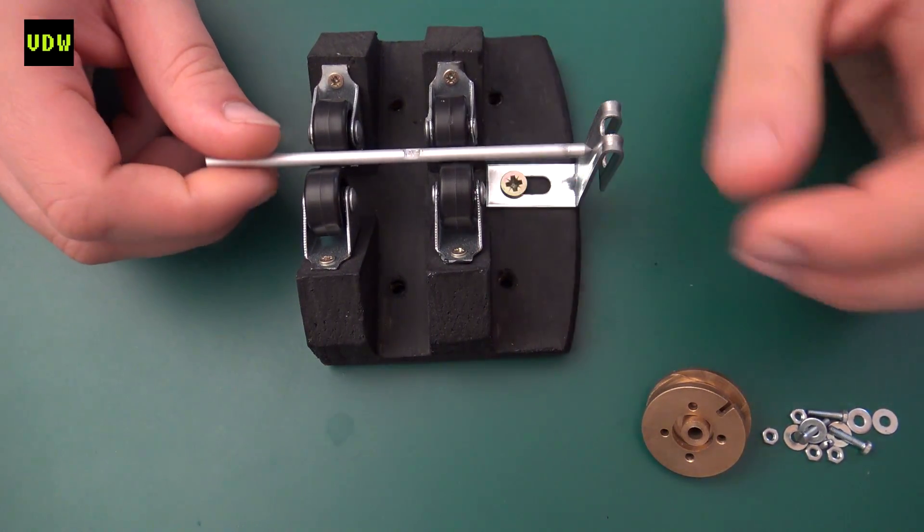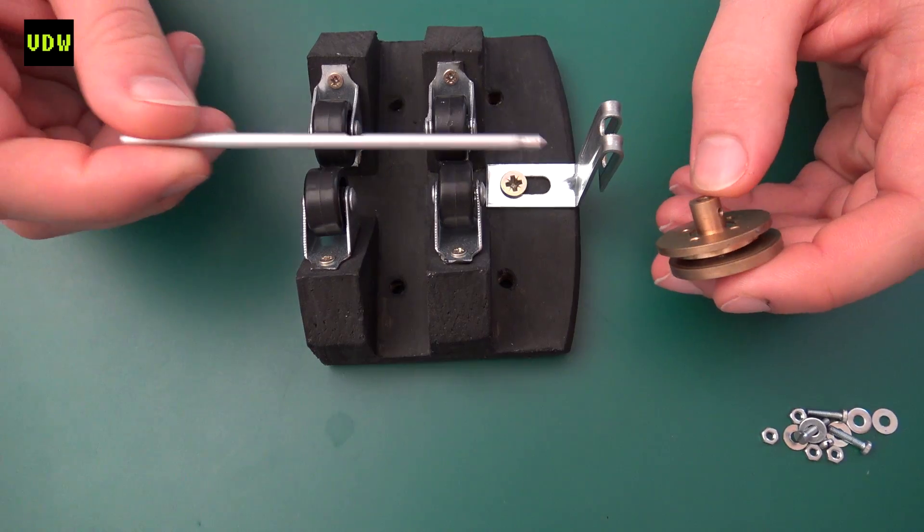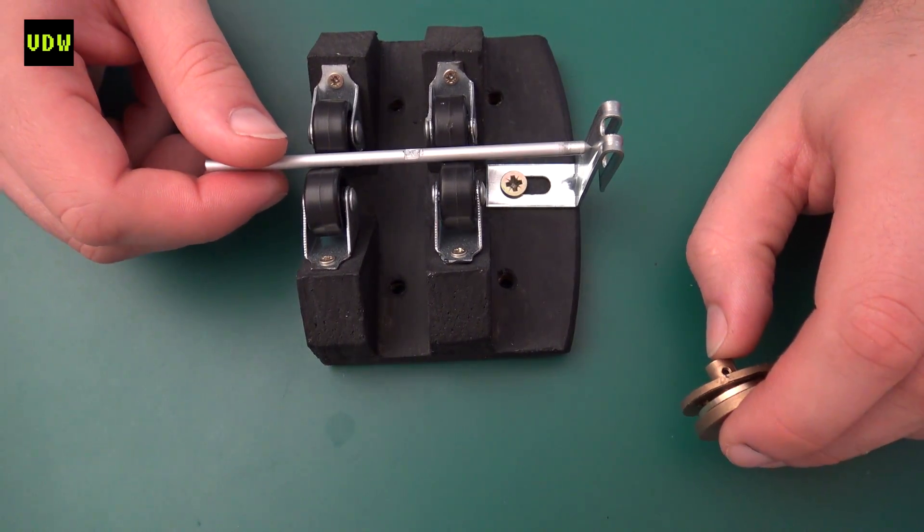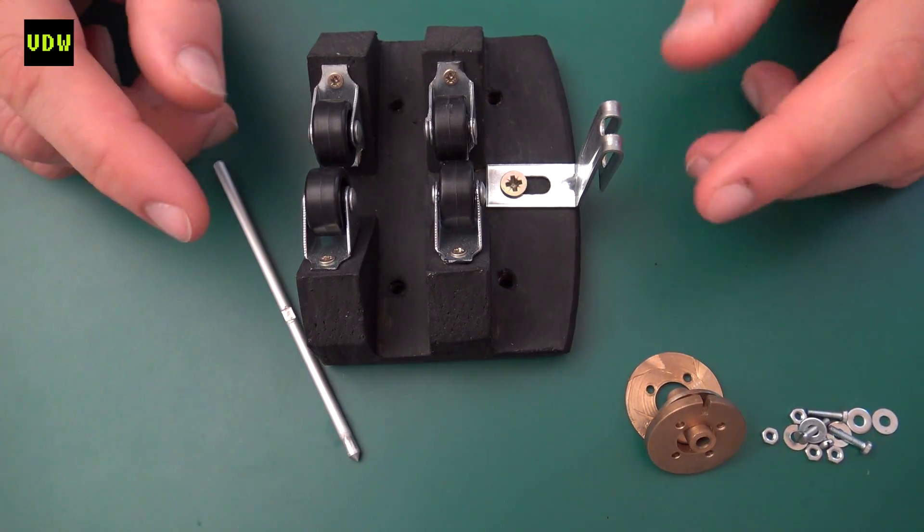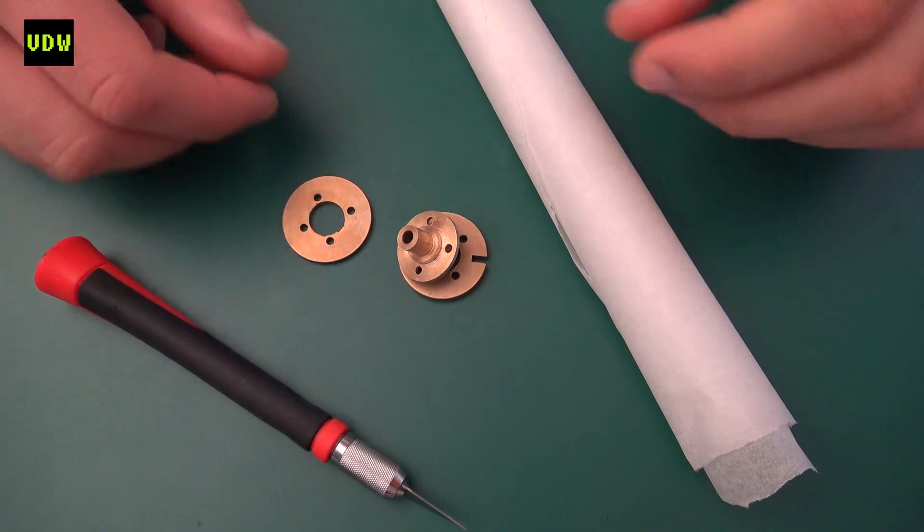While I do the winding, the coil former will sit on this shaft and I slowly wind it up. You do have to do that operation under a microscope, so you're also going to need that.